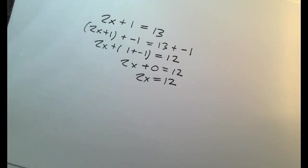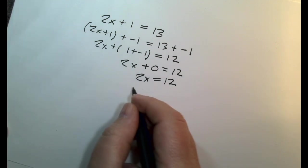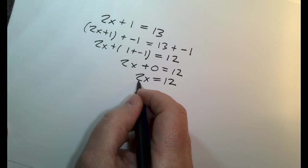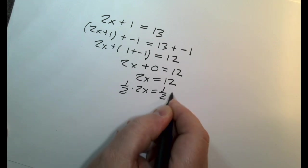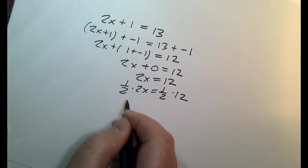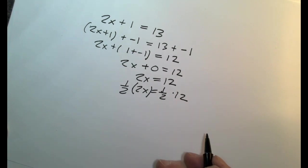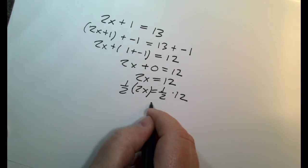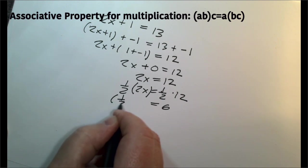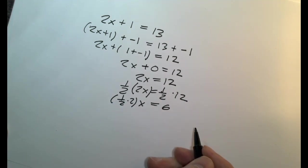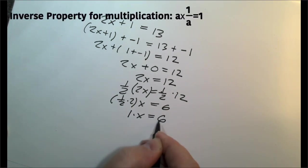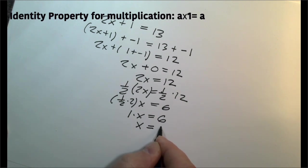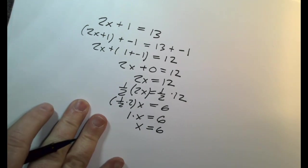Now we do the same thing, but with multiplication. So we choose the multiplicative inverse this time. Multiply both sides. Combine these two together. Use the associative property. This is now the inverse property. And the identity for multiplication, we get x is equal to 6.